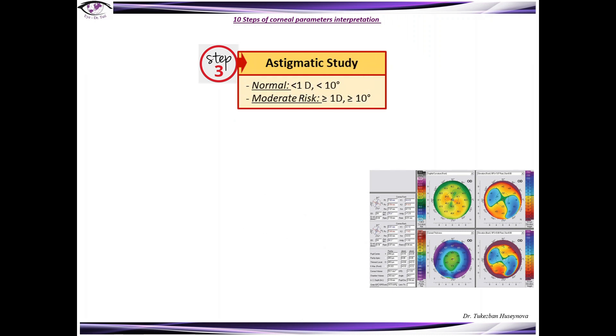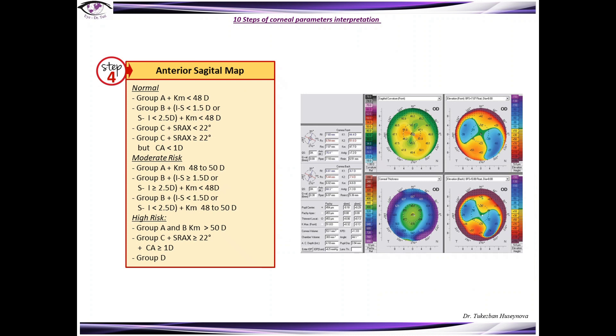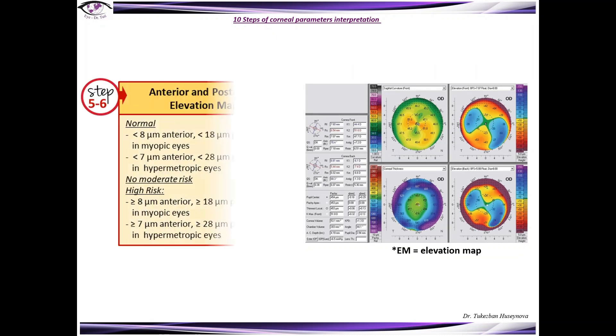Step 3: Astigmatic study. The normal value should be less than 1 diopter. Step 4: Describe sagittal map based on the group classification ABCD, skewed radial axis angle, as well as K-min, and then define for yourself if the patient would be in normal, moderate risk or high risk. Step 5 and 6: evaluate anterior and posterior elevation maps based on cut-off values.